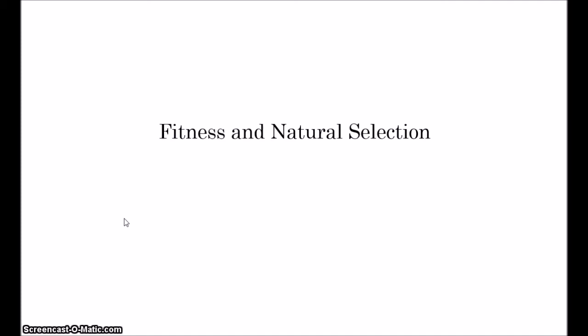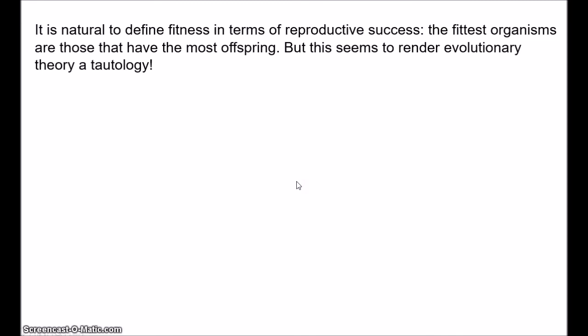More precisely, we would probably want to say survival and reproduction of the fittest. That's a little more clunky, but that's essentially what biologists have in mind. The better adapted organisms reproduce; the worse adapted fail to reproduce, and this accounts for much evolutionary change in populations. The obvious answer, sometimes suggested by biologists, is that fitness is a matter of reproductive success — the fittest organisms are those that produce the most surviving offspring.